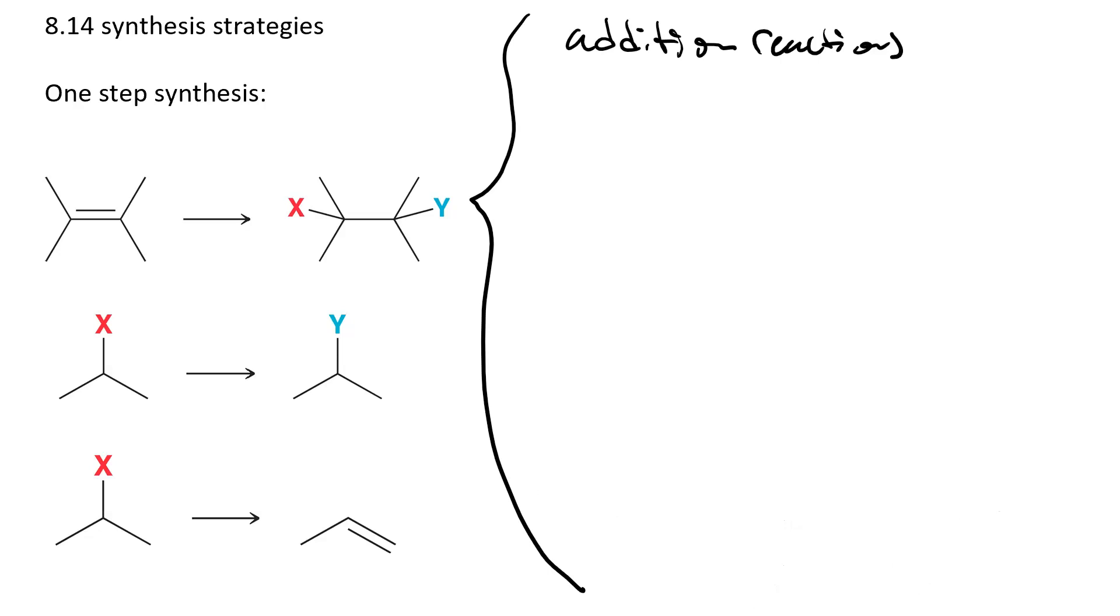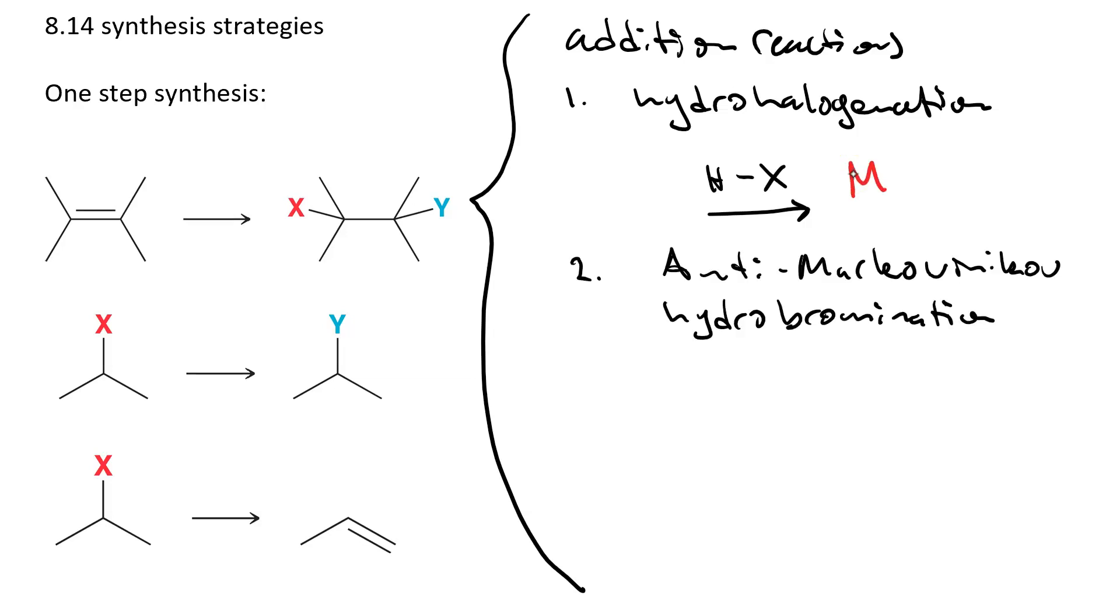We've studied the following types of addition reactions. Hydrohalogenation, where you use a halo acid like HBr, HCl, or HI, and you get an alkyl halide. The result of hydrohalogenation is Markovnikov.